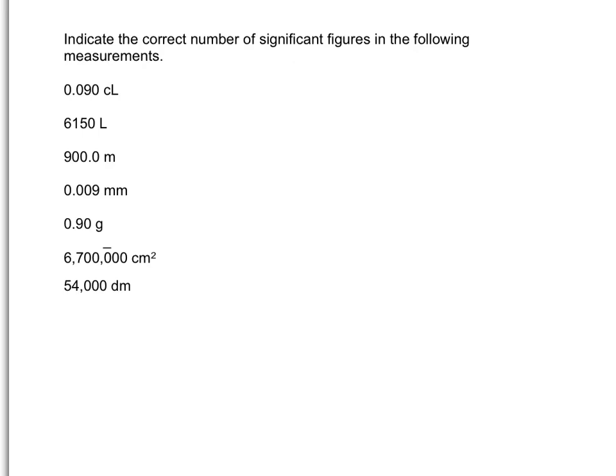In 0.090 centiliters, we have a decimal point, so we count to the right. The first two digits are zeros, so we skip those. Then we've got a nine and a zero, so that's two significant figures. This measurement is so small that we don't have any tenths, so that zero is just holding place to push the nine and the zero out into the proper place value.